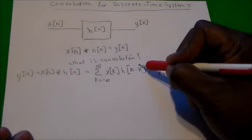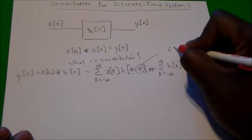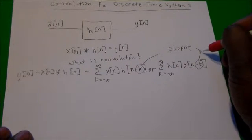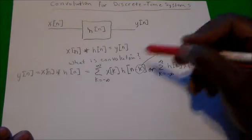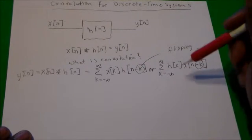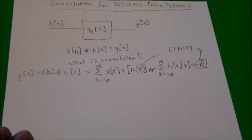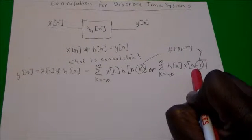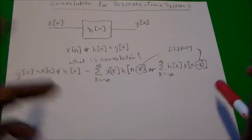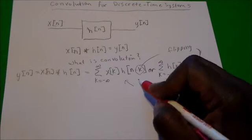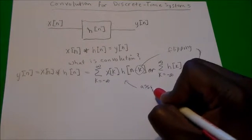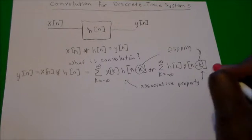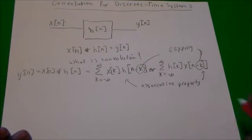The minus k in the formula means that we're flipping the signal — flipping the data or the impulse response with respect to time. I'll show what that means graphically in a bit. Also notice that I placed x of k and h of n minus k, and we can switch those around. This is because convolution obeys the commutative property.